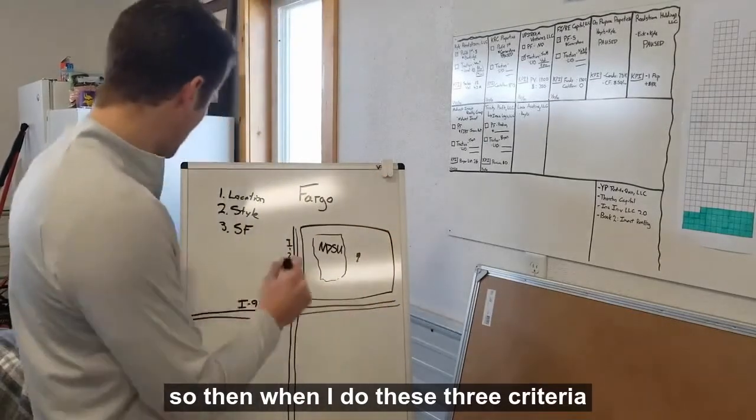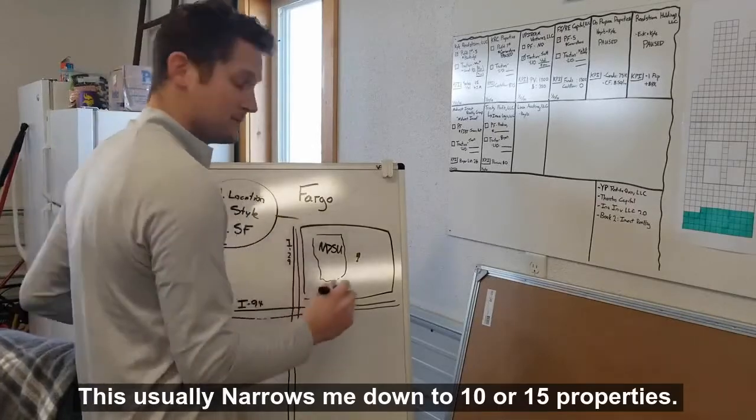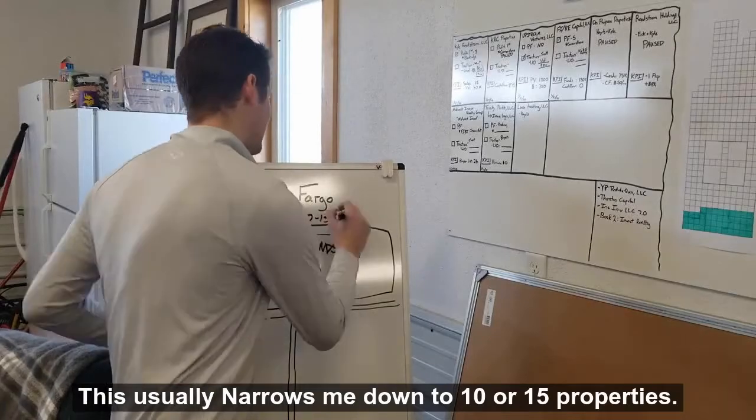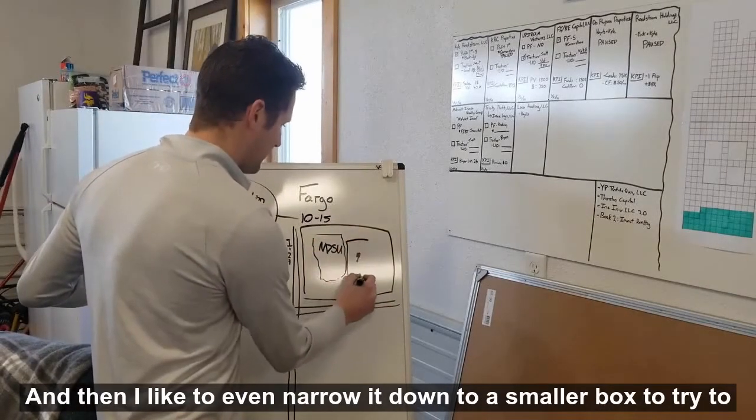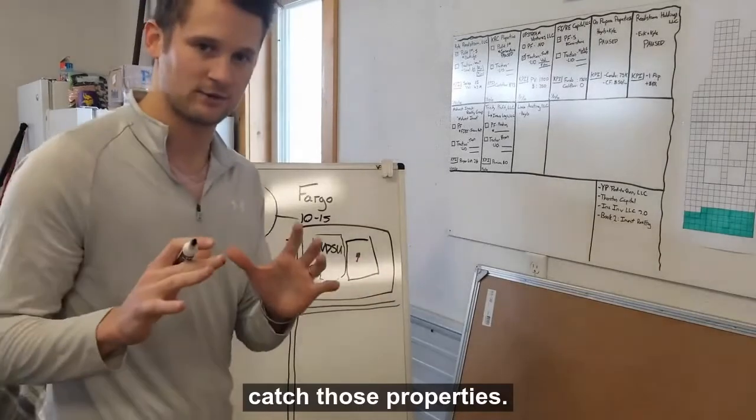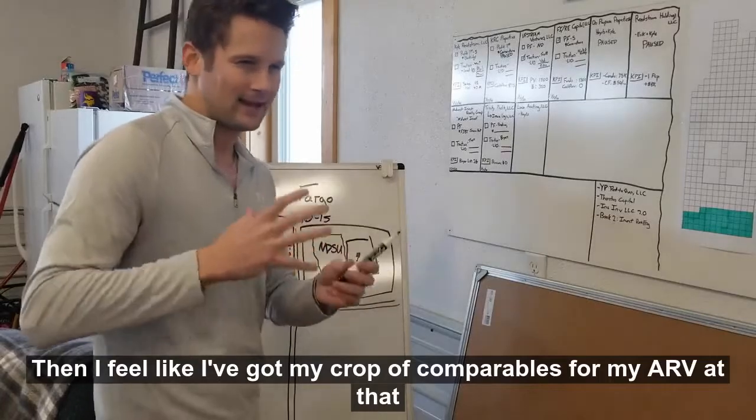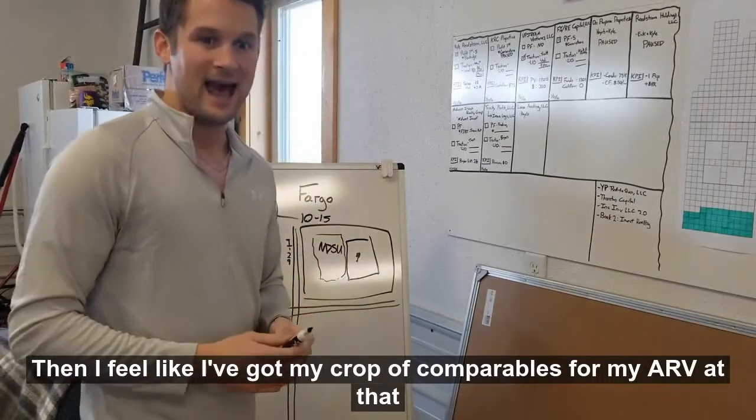So then when I do these three criteria, this usually narrows me down to 10 or 15 properties. And then I like to even narrow it down to a smaller box to try to catch those properties. So if I've got 10 to 15 properties, then I feel like I've got my crop of comparables for my ARV.